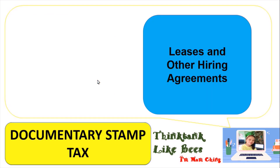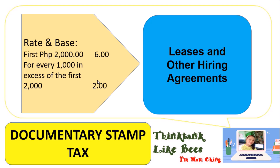For leases and other hiring agreements, the rate and base is: the first 2,000 pesos is 6 pesos; for every 1,000 in excess of the first 2,000, it is 2 pesos. For example, with a lease worth 10,000 pesos: the first 2,000 is 6 pesos; the remaining 8,000 divided by 1,000 equals 8, multiplied by 2 pesos equals 16 pesos; so 16 plus 6 equals 24 pesos in documentary stamp tax.